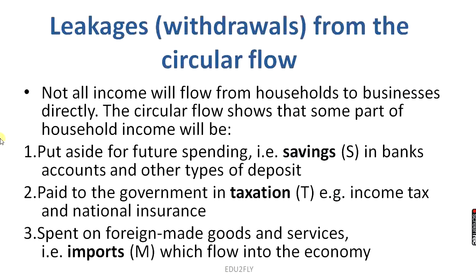Now let us move to the leakages and injections of the circular flow. Leakages are basically withdrawals from the circular flow — not all income flows directly from household to businesses. The circular flow shows that some part of household income has three possible uses: it can be saved in banks or saving accounts; it can be used for taxation, such as income tax; or it can be spent on foreign-made goods and services through imports. So the three leakages are: savings (S), taxation (T), and imports (M).